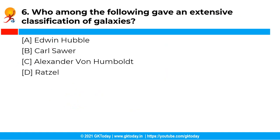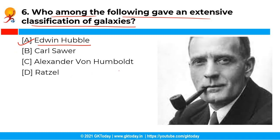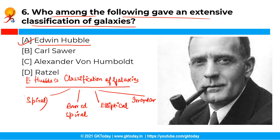The next question: who among the following gave an extensive classification of galaxies? The correct answer is Option A, i.e. Edwin Hubble. Edwin Hubble gave an extensive classification of galaxies and grouped them into four classes, namely spiral, barred spiral, elliptical, and irregular.